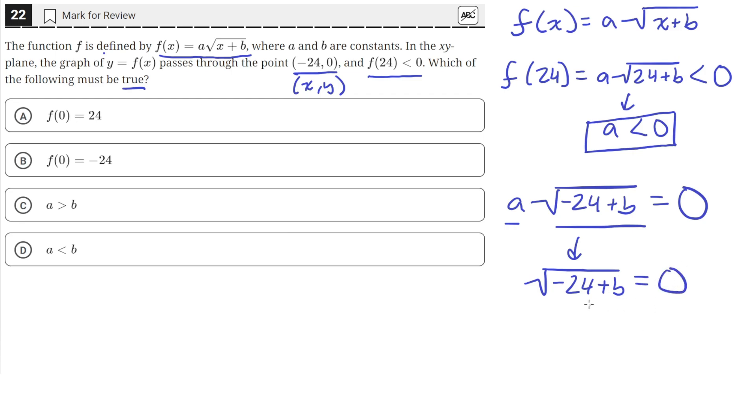We can solve for b now. Let's square both sides. We'll have -24+b on the left and 0² = 0 on the right. Adding 24 to both sides, -24+24 = 0, leaving b on the left, and 0+24 = 24 on the right.